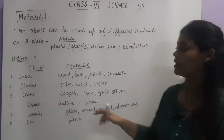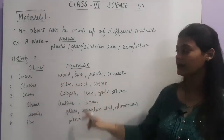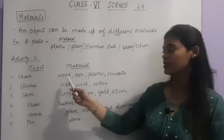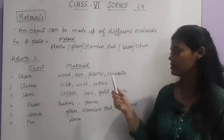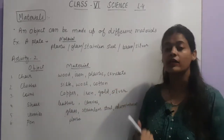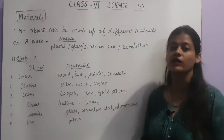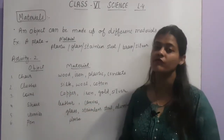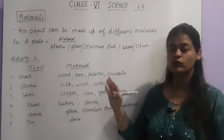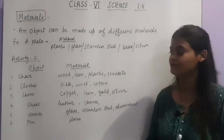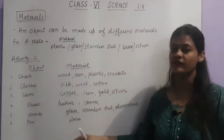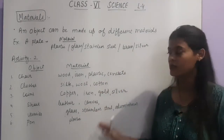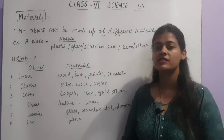Now let's see Activity 2 given in your book. Here we have given objects and the materials by which they can be made. First, chair — chair can be either made up of wood; you have seen some iron chairs; plastic chairs are also there; they can also be made up of concrete, meaning cemented ones that you generally find in gardens. Next is clothes — clothes can be made up of different fabrics like silk, woolen, or cotton. The hint is given at the end of the activity, so you can choose materials from the hint and write them in your book, or you can also add some other materials yourself.